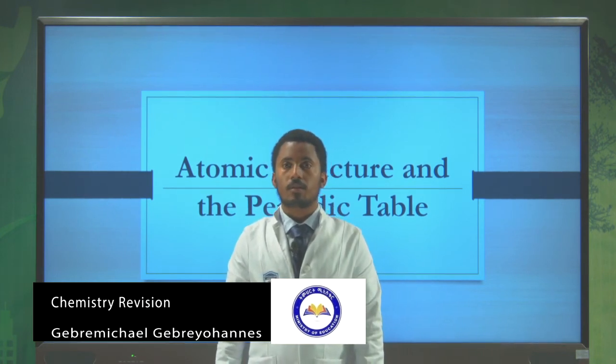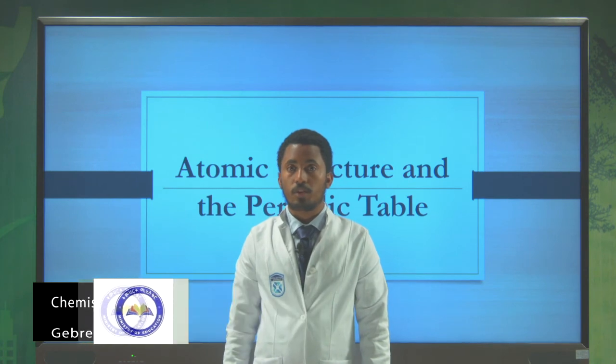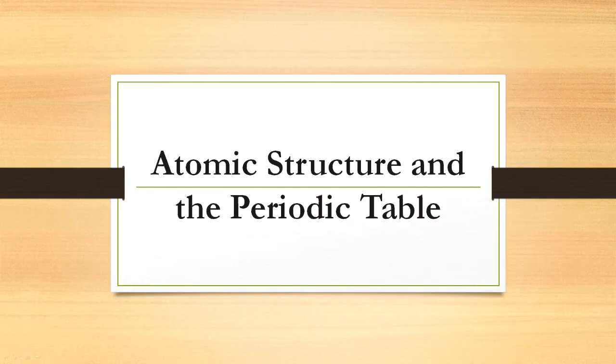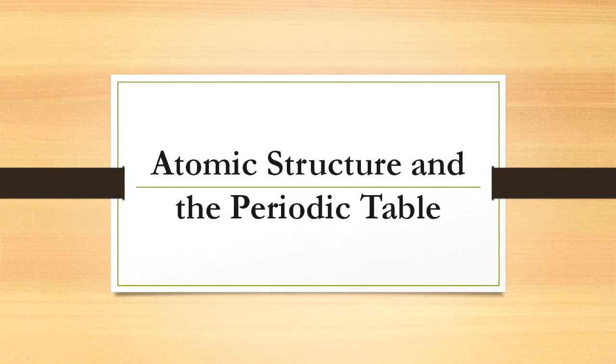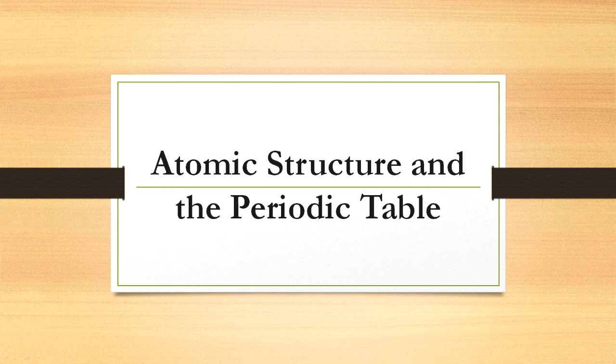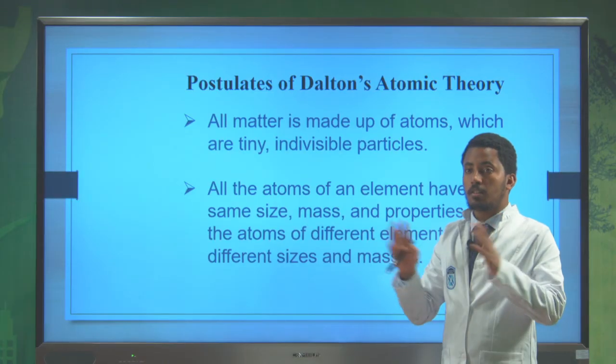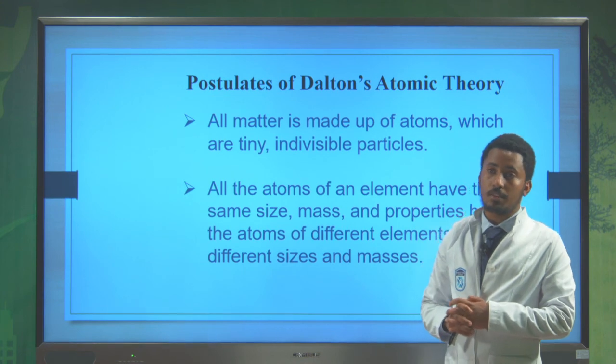This is chemistry revision for grade 12, the third lesson. Our lesson is about atomic structure and the periodic table.